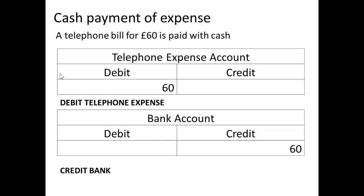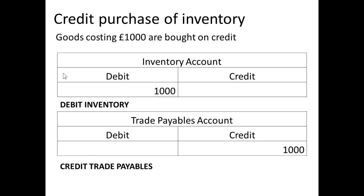We have the cash payment of an expense, so we pay a telephone bill. We will debit the expense account — so debit the telephone expense — and credit the bank account. The asset of cash in the bank has, of course, decreased.